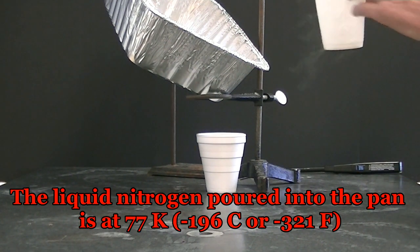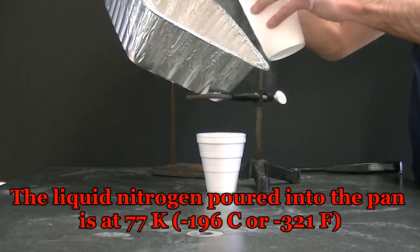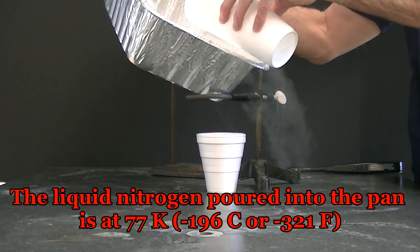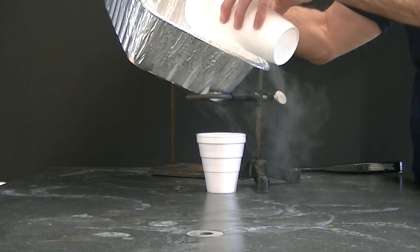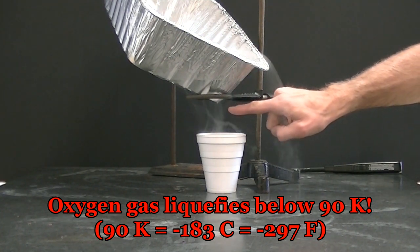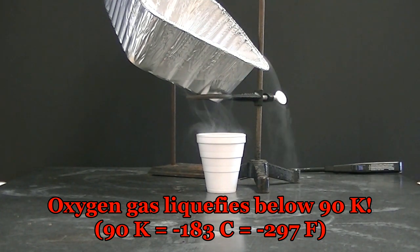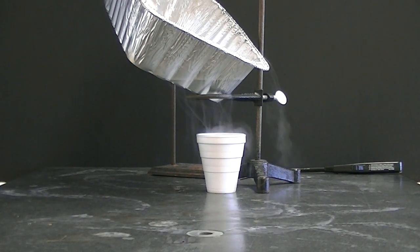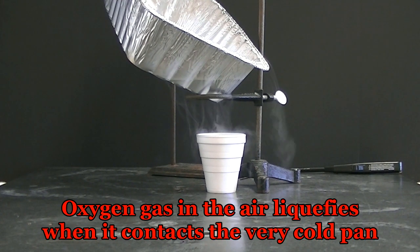Under the pan I'm going to pour some liquid nitrogen which should cool the pan to well below 90 Kelvin, which is the condensation point of oxygen. And you might notice very rapidly some drips starting to fall into the cup and you can hear it dropping. Those drops you see falling are drops of liquid oxygen.